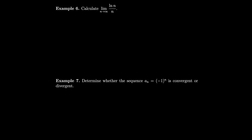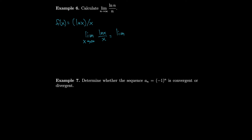How about lim ln(n)/n? We have a matching function f(x) = ln(x)/x over real numbers, so we evaluate lim ln(x)/x as x → ∞. This is the indeterminate form ∞/∞, so we apply L'Hôpital's rule: derivative of numerator is 1/x, derivative of denominator is 1, giving lim (1/x)/1 = lim 1/x = 0. Therefore lim ln(n)/n = 0.